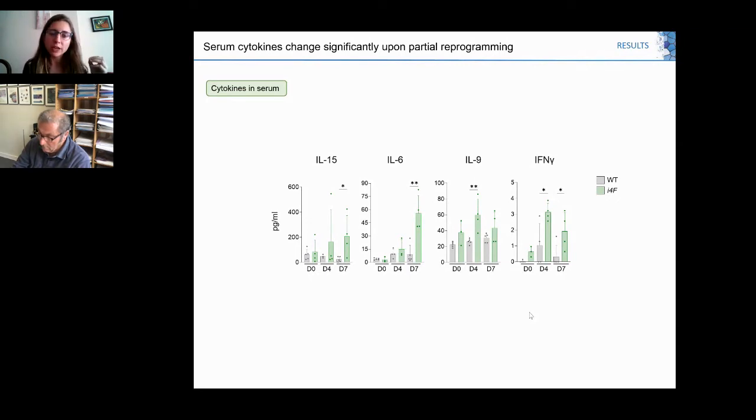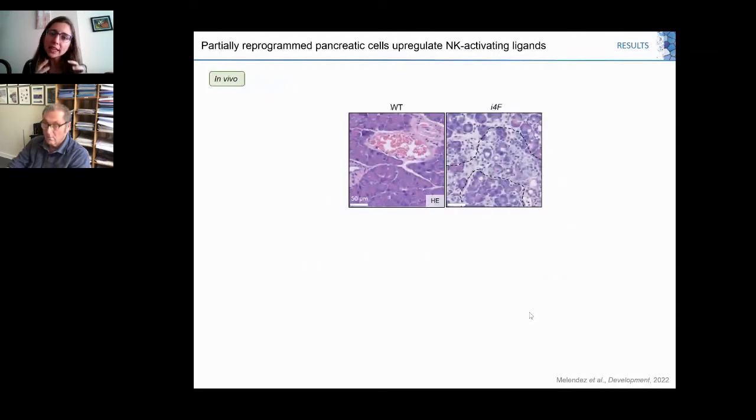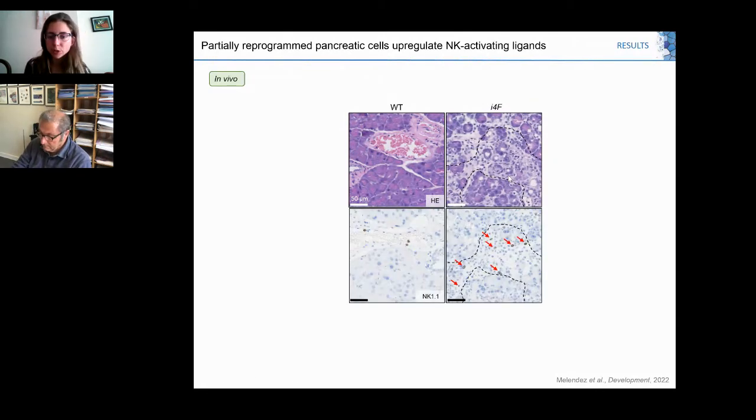Focusing on NK cells, we first checked whether these cells were infiltrating our tissue. Here you can see how the tissue changes in the pancreas. We focus on pancreas because in our mouse model, the organ with the most reprogramming in these first steps is the pancreas. When we checked expression of NK cells using an NK1.1 marker, we observed that NK1.1 positive cells were indeed infiltrating our pancreas undergoing reprogramming.